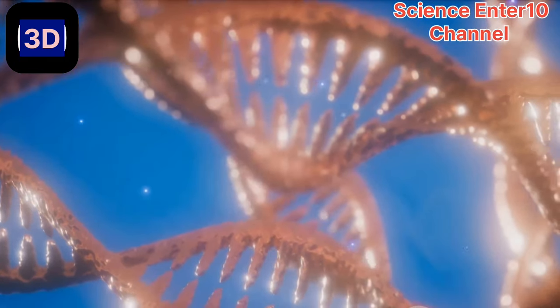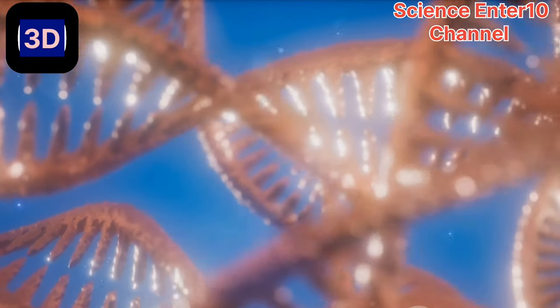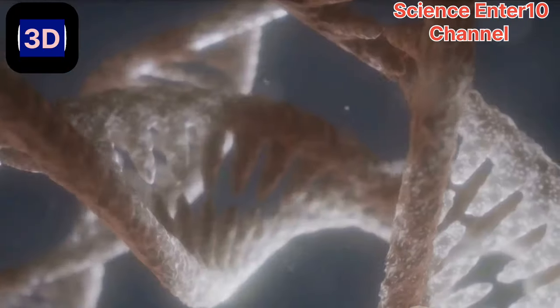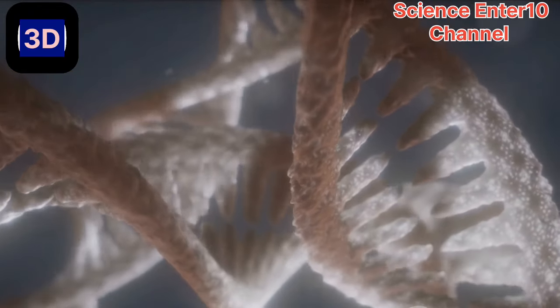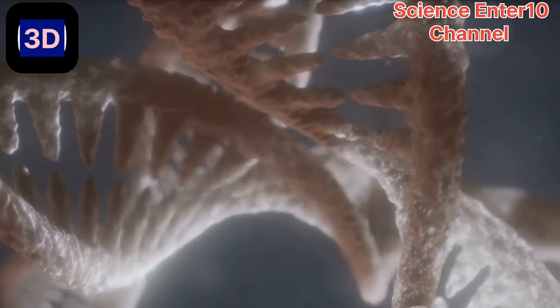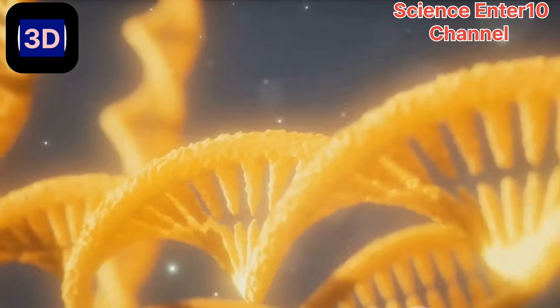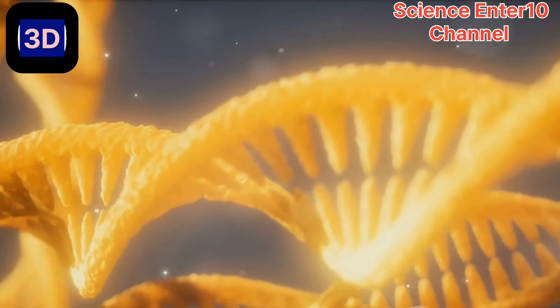Each chromosome, made up of two sister chromatids, aligns at the cell's equator, preparing for the next dramatic act. This precise alignment is crucial as it ensures that each new cell will receive one copy of each chromosome.